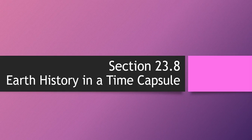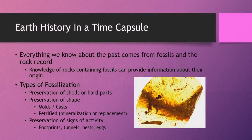Section 23.8: Earth History and a Time Capsule. Everything we know about the past comes from what we understand about fossils and rocks, and how knowledge of rocks that contain fossils can provide information about the rock's origin or the fossil's origin, depending on what the situation is.